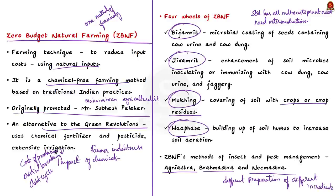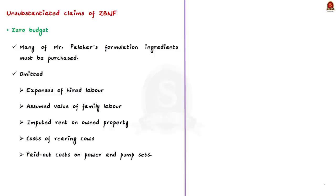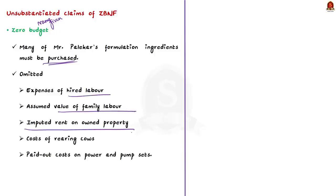The author discusses several flaws in this technique. First, the name itself is misleading — zero budget natural farming is far from being a zero budget project because many of Palekar's formulation ingredients must be purchased. Additionally, proponents simply omit the expense of hired labor, assumed value of family labor, imputed rent on owned property, cost of rearing cow, and paid-out costs on power and pump sets.